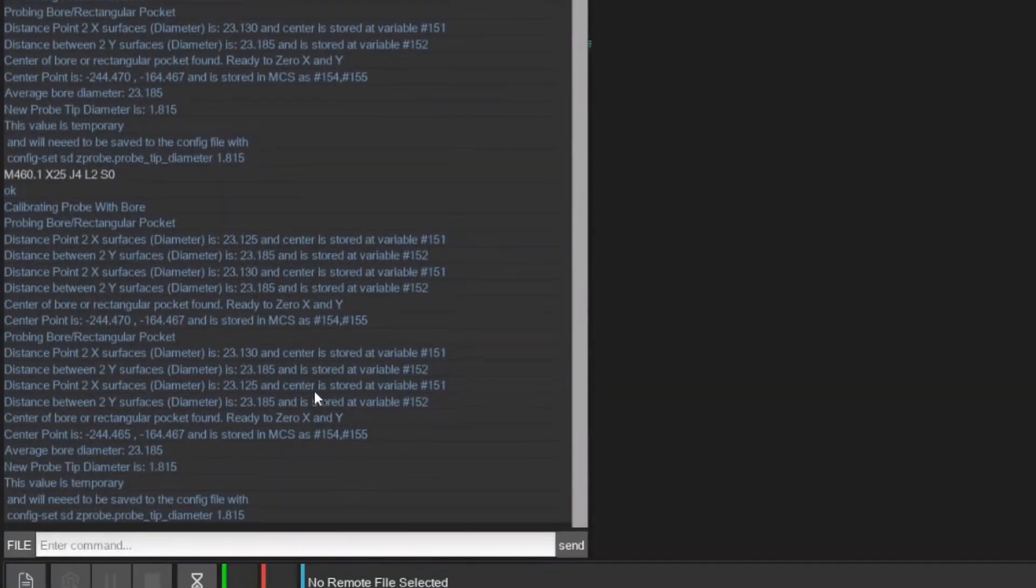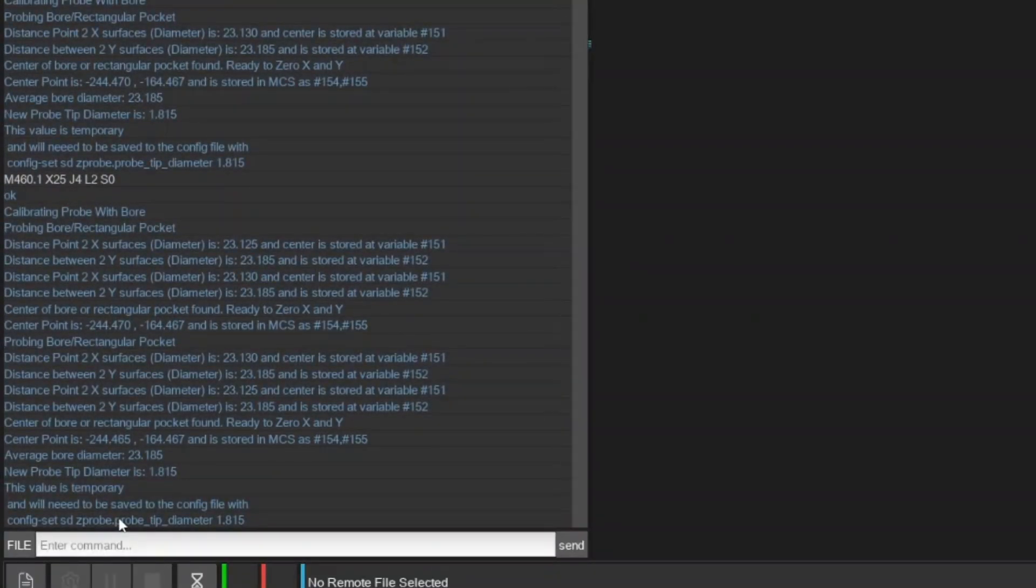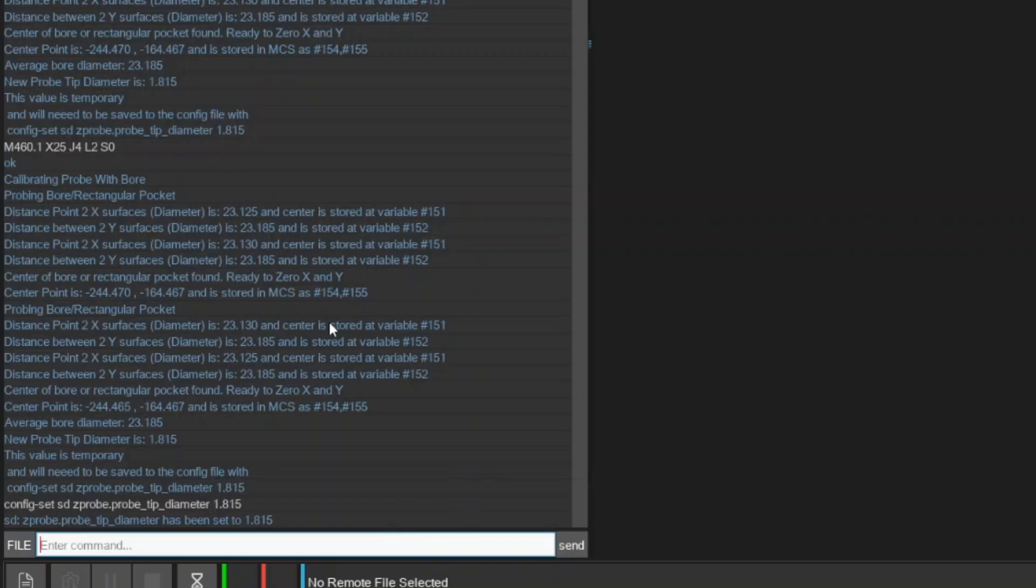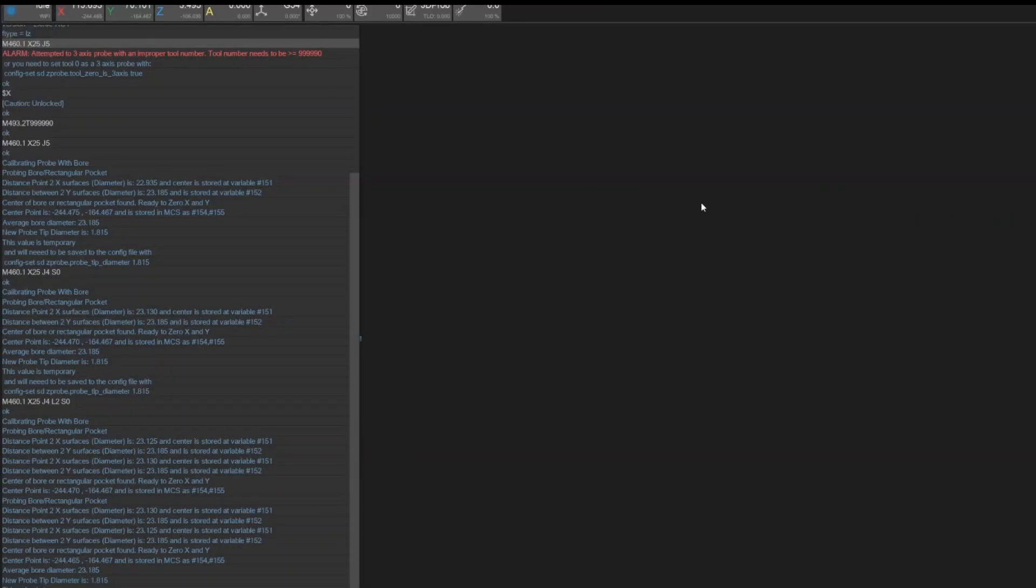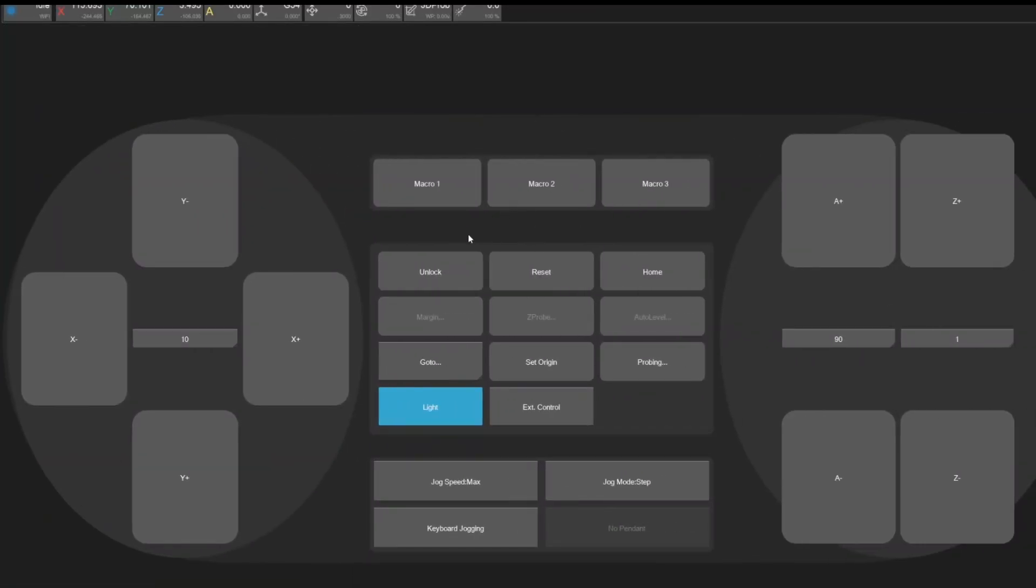After it finishes, you will need to go to the MDI, find the line showing you the measured probe tip diameter and copy it into the MDI. In my case, the command is config-set space sd space zprobe dot probe underscore tip underscore diameter space 1.815. Hit the send button and then restart your machine to load the config setting.